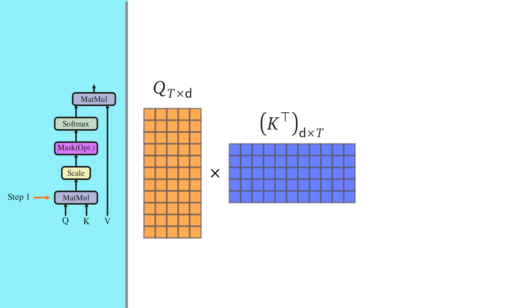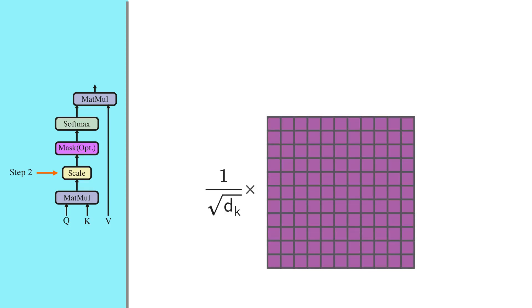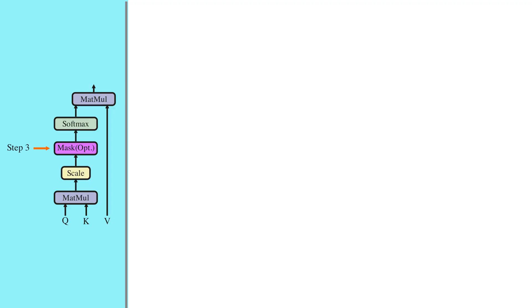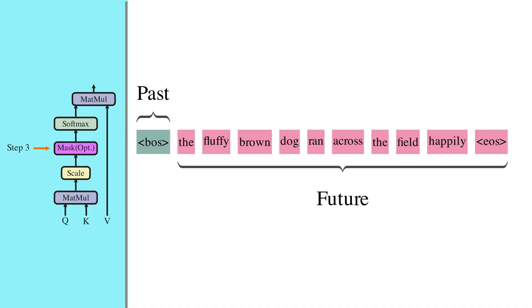This gives us a compatibility matrix with dimensionality T by T. In the next step we scale the compatibility matrix by 1 over the square root of d_k, where d_k is the dimensionality of vectors Q and K. Step 3 is an optional step that I did not cover in the previous video; it is only needed in some applications such as sequence-to-sequence translation or autoregressive sequence generation.